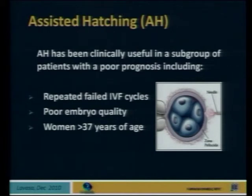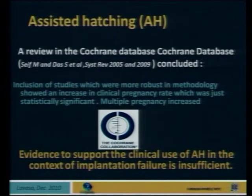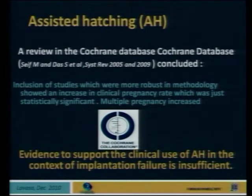Even people favoring assisted hatching say it should be used in repeated failed IVF cycles, poor embryo quality, and women over the age of 37. But a review of the Cochrane database from 2005 and 2009 concluded that evidence to support the clinical use of assisted hatching in the context of implantation failure is insufficient. Am I going to do assisted hatching in a patient who failed ten times? Yes — at least for part of her embryos — because at this stage we are desperate to help her. She might or might not belong to the successful group, but it is a viable procedure.